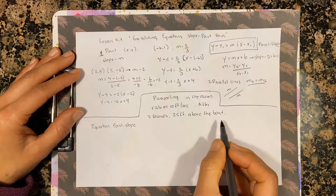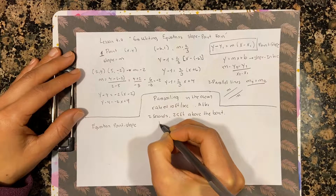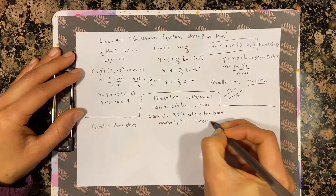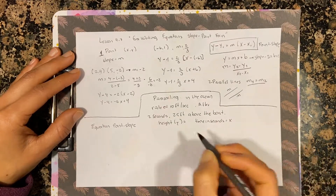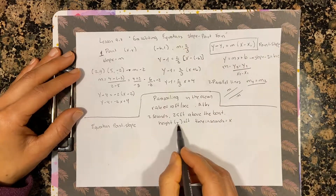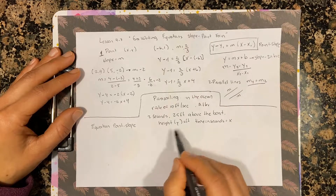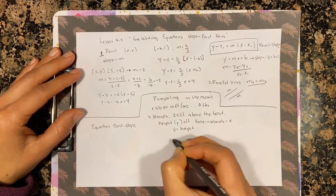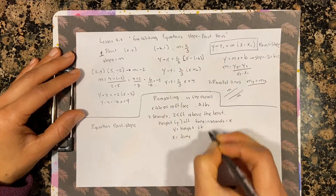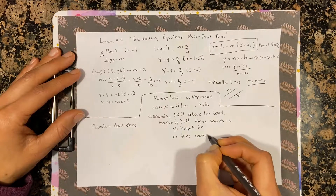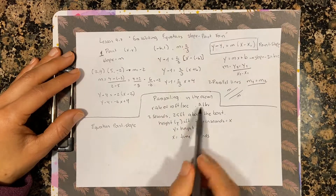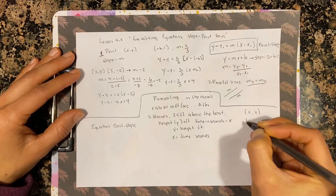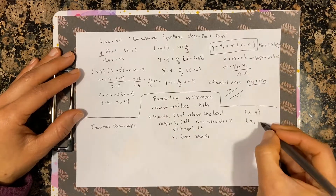The equation will relate height to time. Height will be the y variable (in feet) and time will be the x variable (in seconds). The point you have is: after 2 seconds you are 25 feet above the boat, so your point is (x, y) = (2, 25).